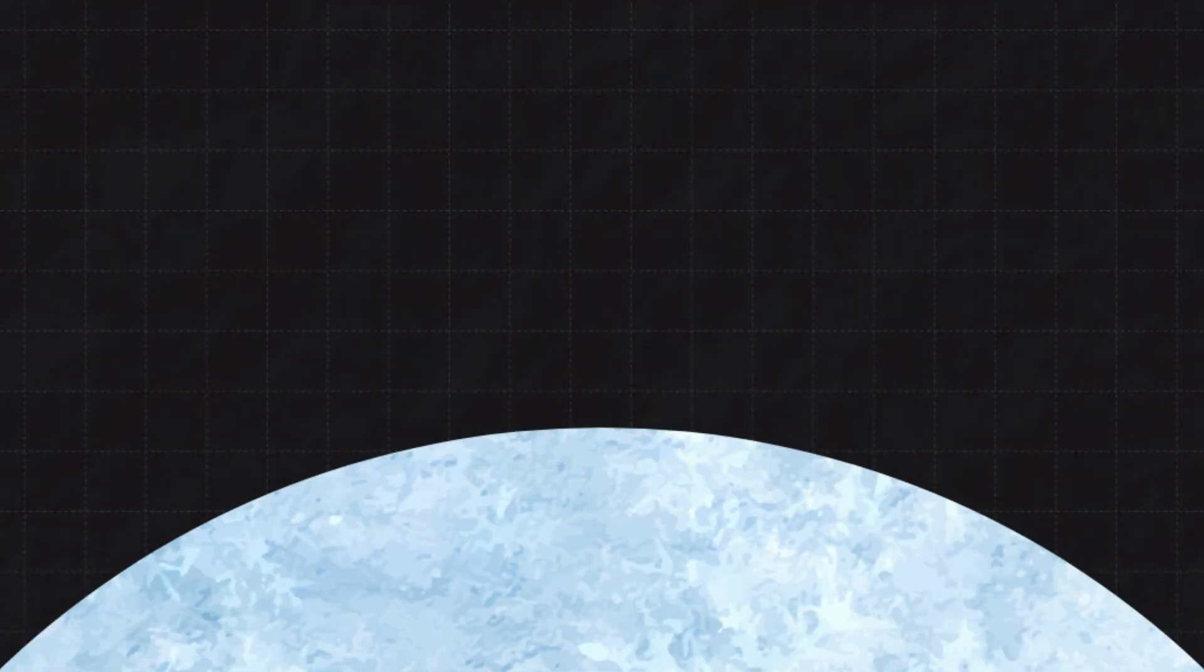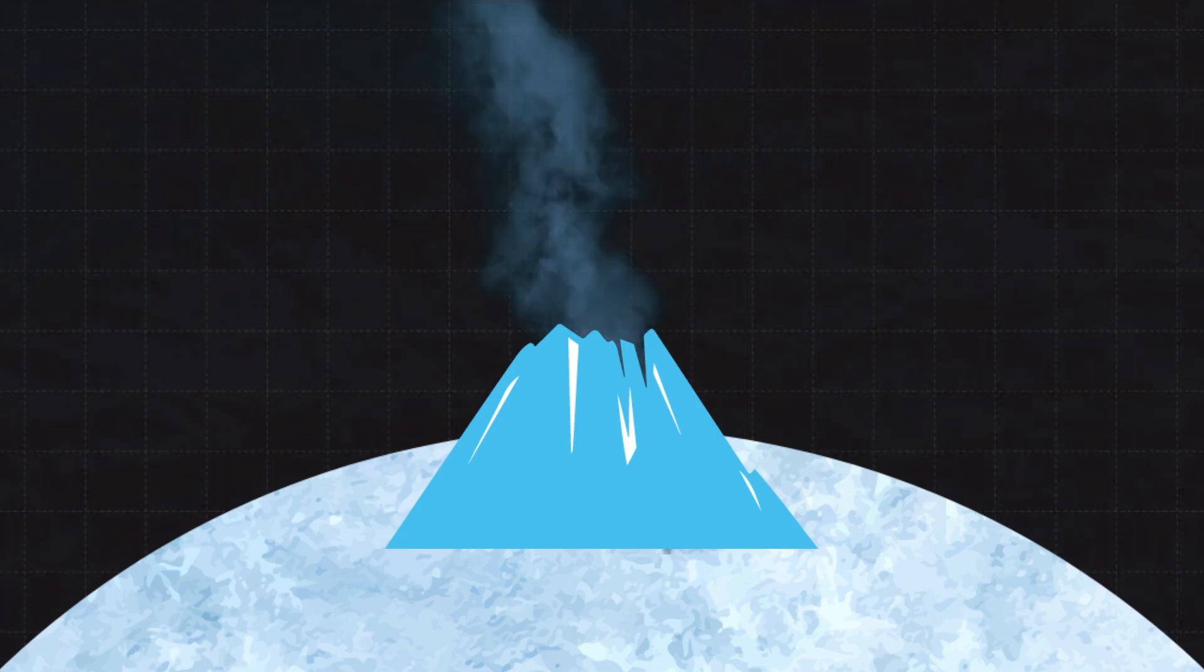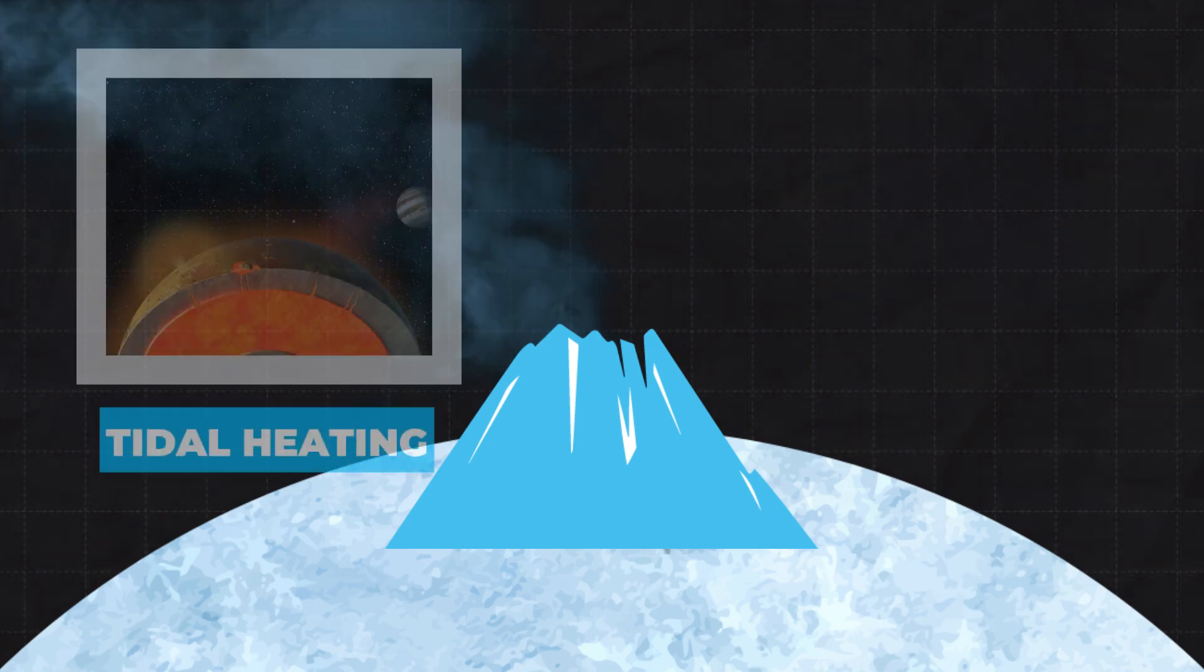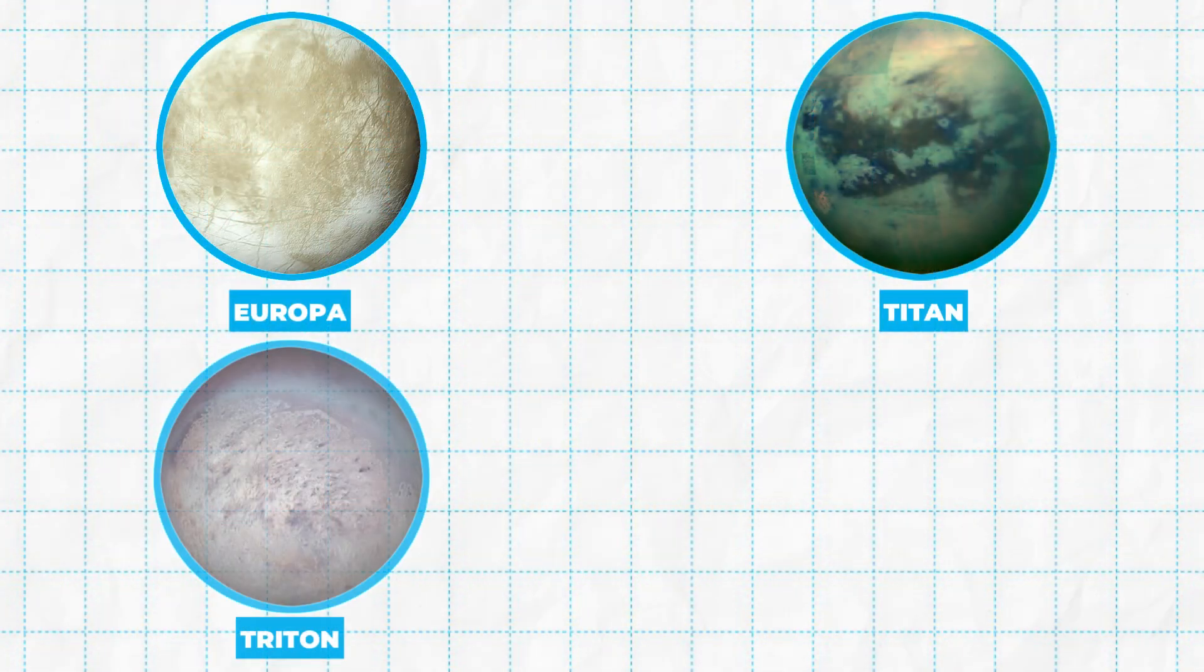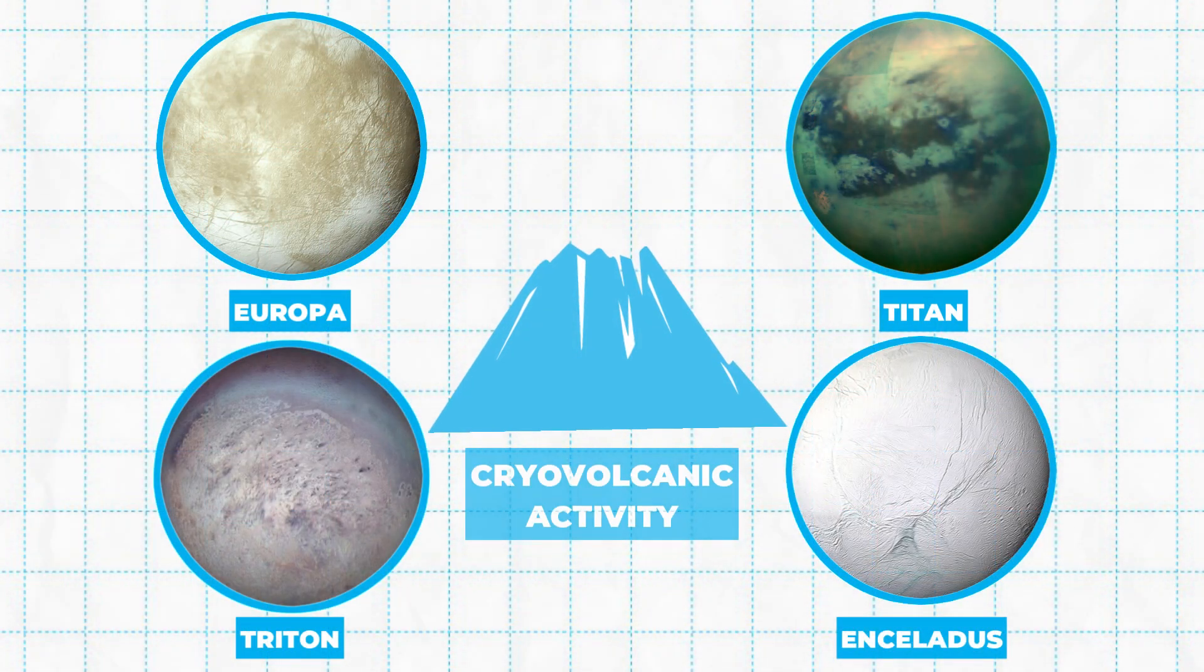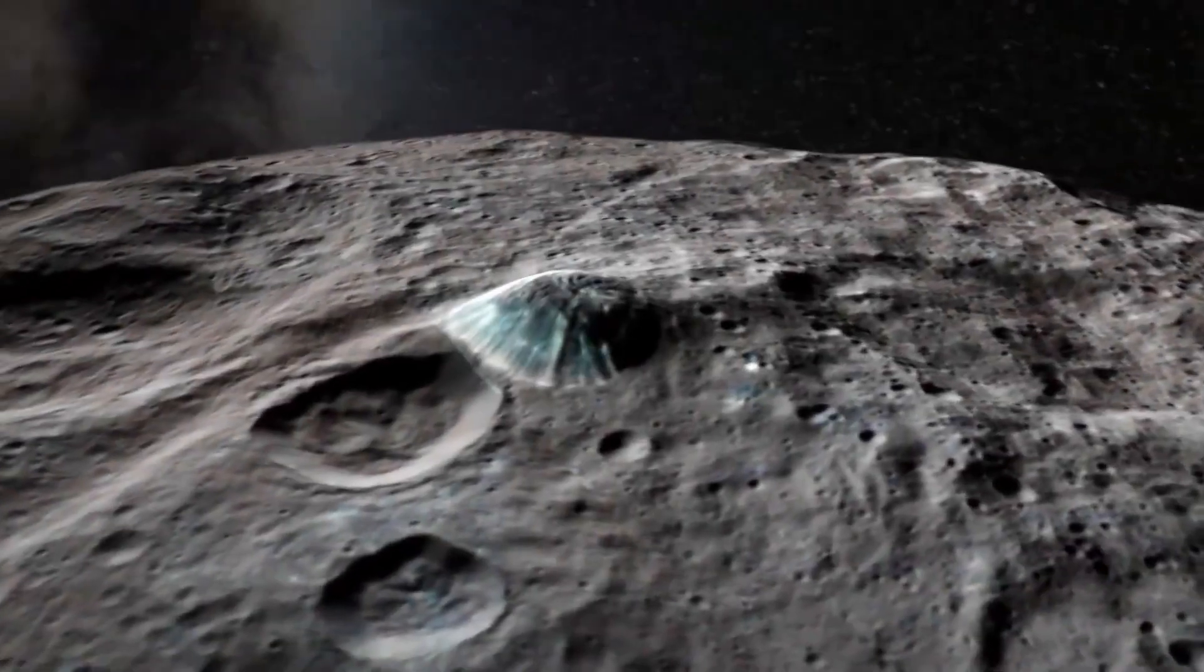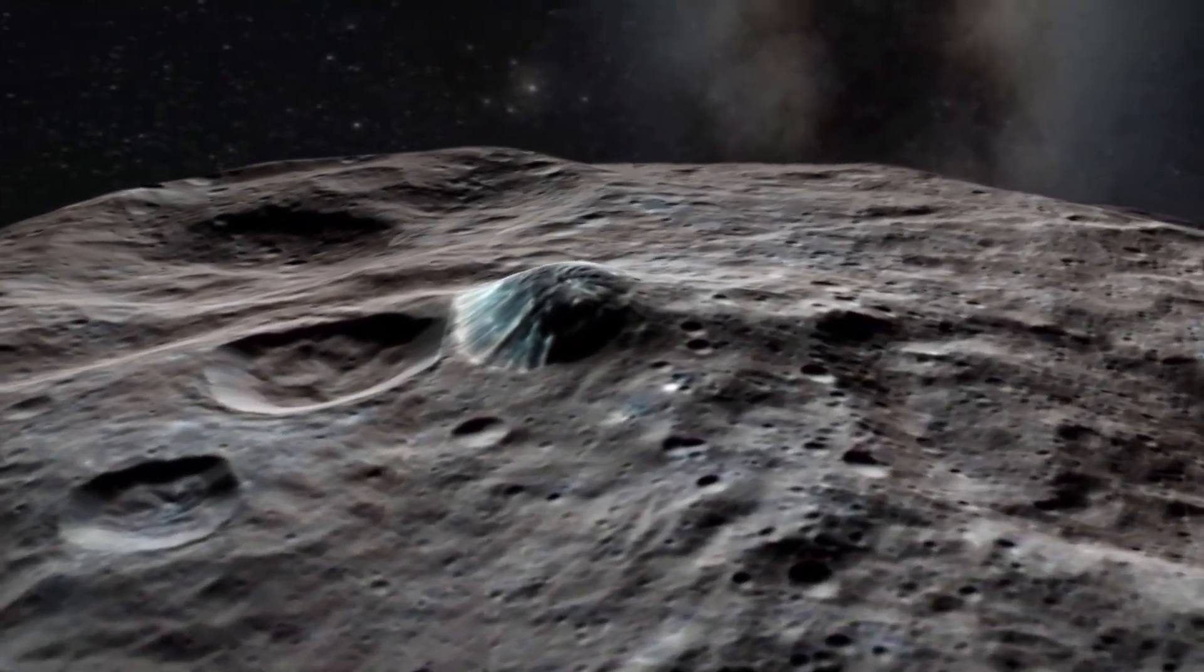Cryovolcanism is a geological phenomenon that occurs when frozen water or other aqueous solutions erupt as liquid or vapor phases on icy celestial bodies. Internal heat sources like tidal heating or radioactive decay drive this process. Moons such as Europa, Titan, Triton, and Enceladus exhibit cryovolcanic activity in our solar system, and evidence of this activity on Ceres remains uncertain despite ongoing research.